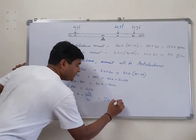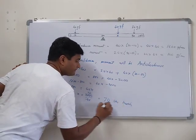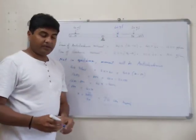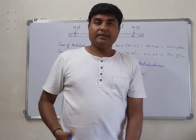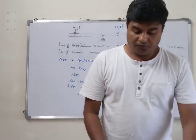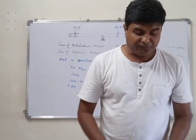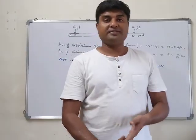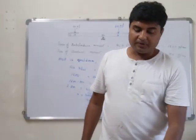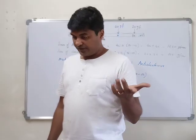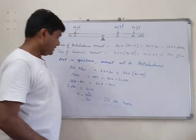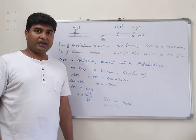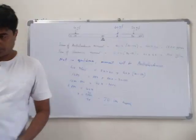The additional 40 gf weight has to be placed at the 70 centimeter mark on the scale. That completes question 11. Questions 12 to 18 will be covered in the next video.